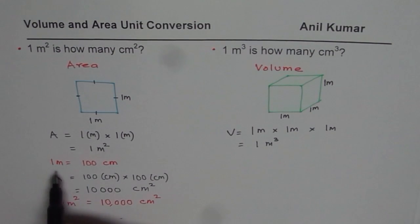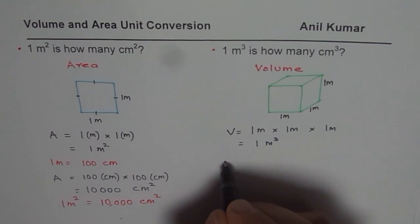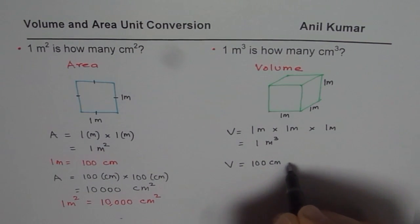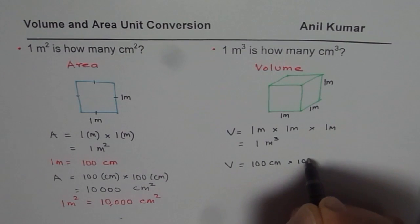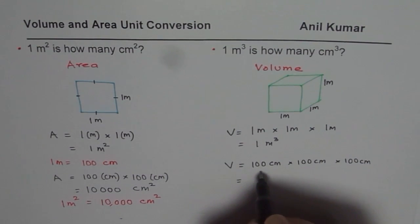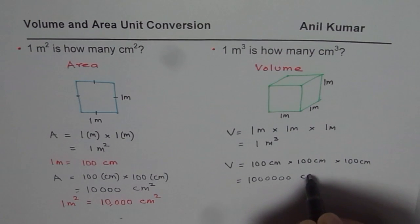In that case the volume will be 1 meter times 1 meter times 1 meter or 1 meter cube. Since you know 1 meter is 100 centimeters, I could write volume as 100 centimeters times 100 centimeters times 100 centimeters. And that gives me how many zeros? 2 and then 2 more and 2 more, right?